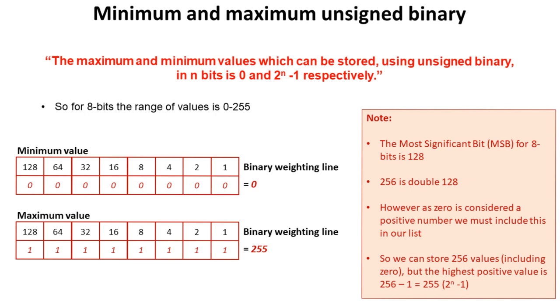we can prove this because here's our binary weighting line. If we place 0s under every column and then add all the values up, so 0 ones and 0 twos and 0 fours, obviously we end up with 0.